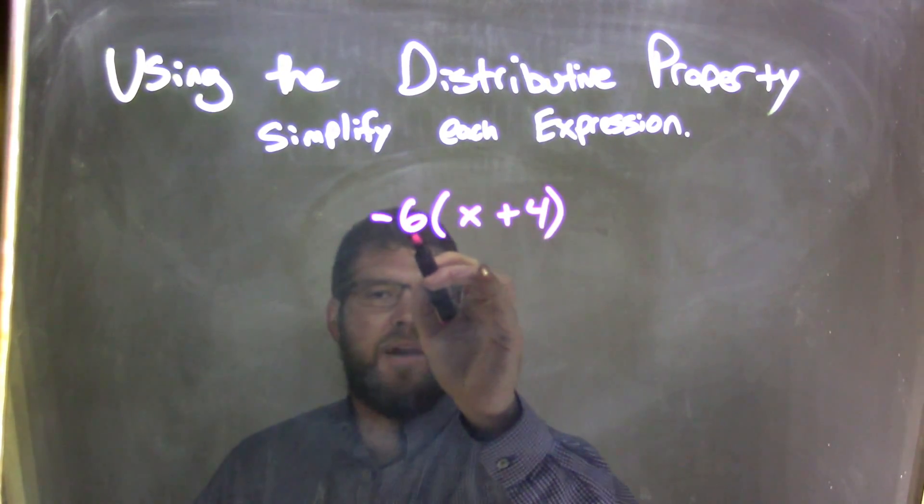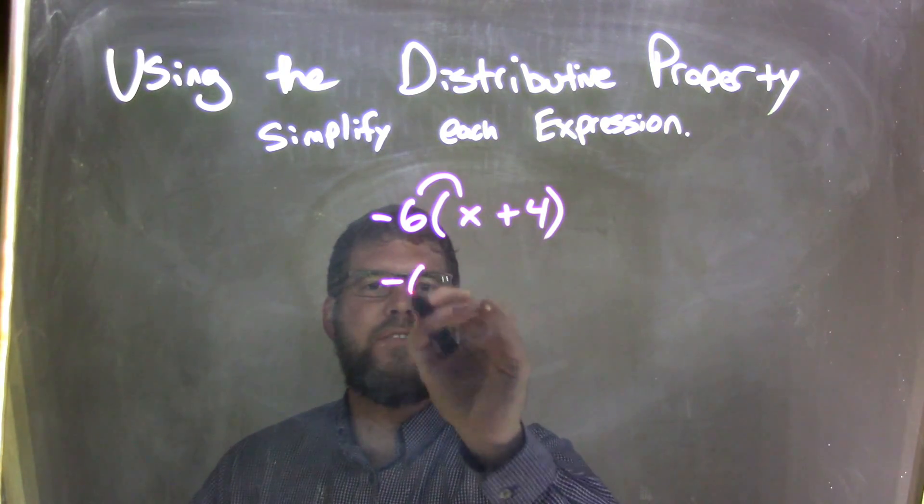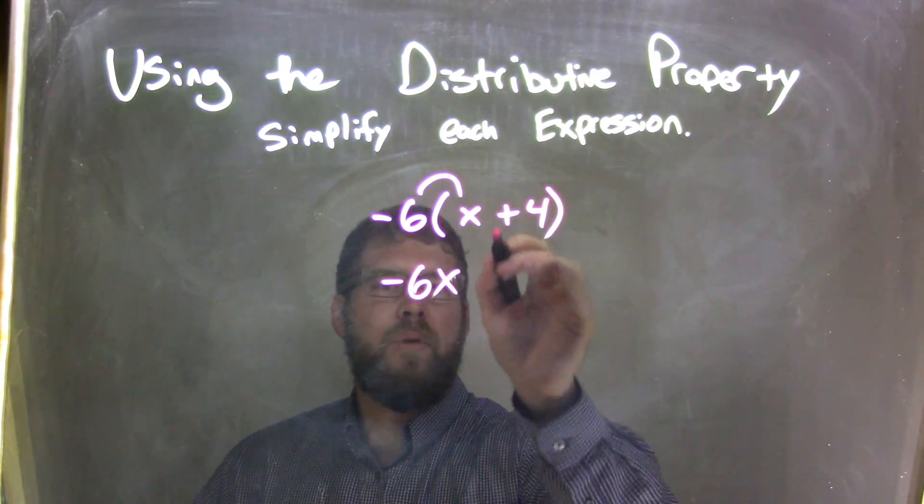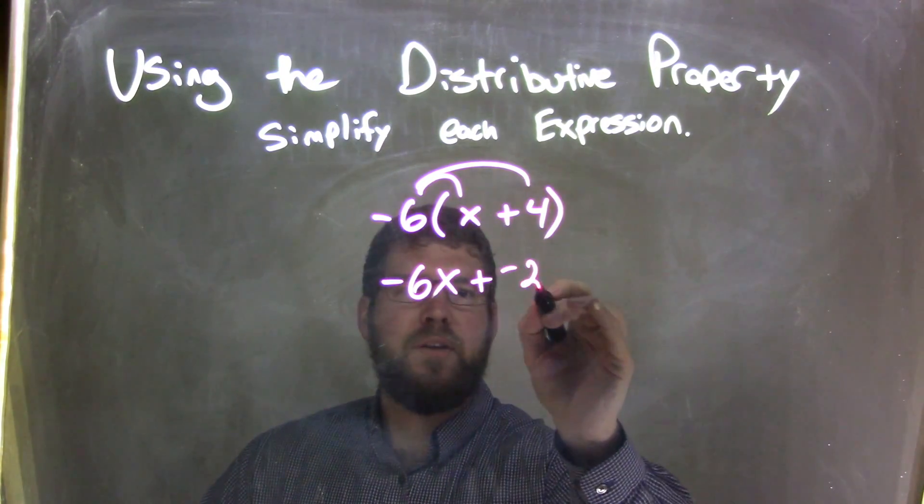Now, we have negative 6 on the outside. Multiplication. Negative 6 times x is negative 6x. Bring down the plus sign. Negative 6 times 4 is negative 24.